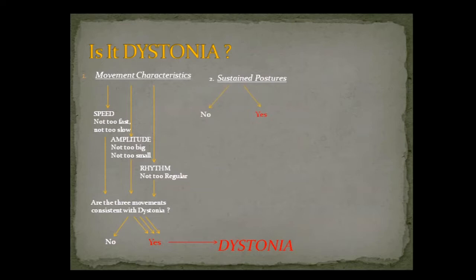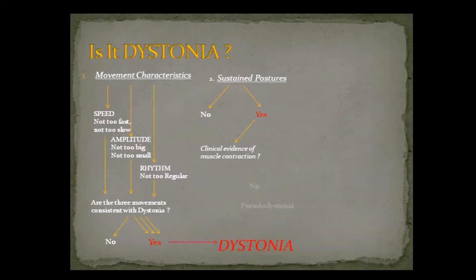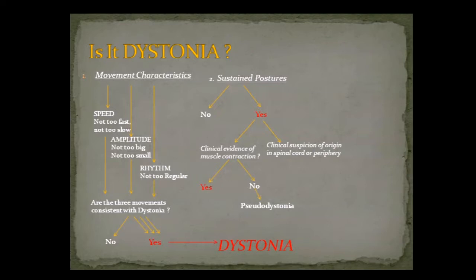Another characteristic of dystonia is sustained postures. If sustained postures are present, you want to see if there is clinical evidence of muscle contraction. If you see a focal or writer's cramp, you will not only see the muscle contractions but can also do EMGs, which will show a lot of firing. If it does not show you that, you want to think of a diagnosis other than dystonia — it's called pseudodystonia. If the evidence is there, it points towards dystonia.